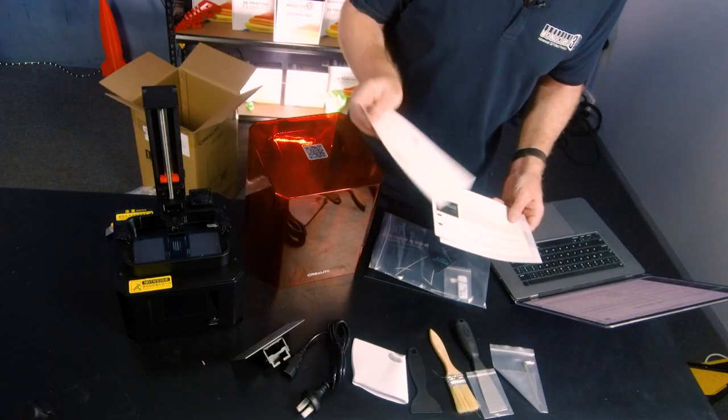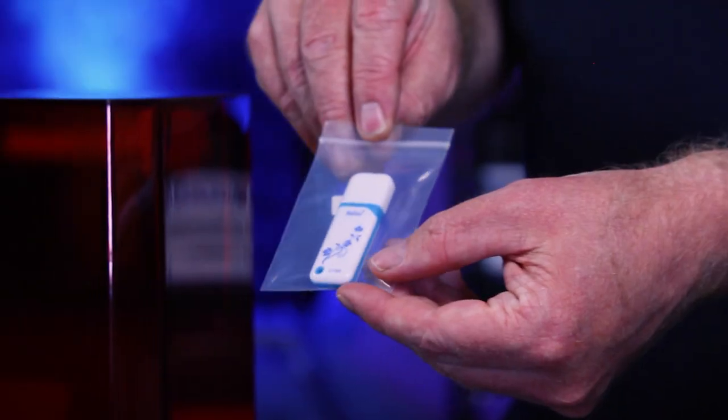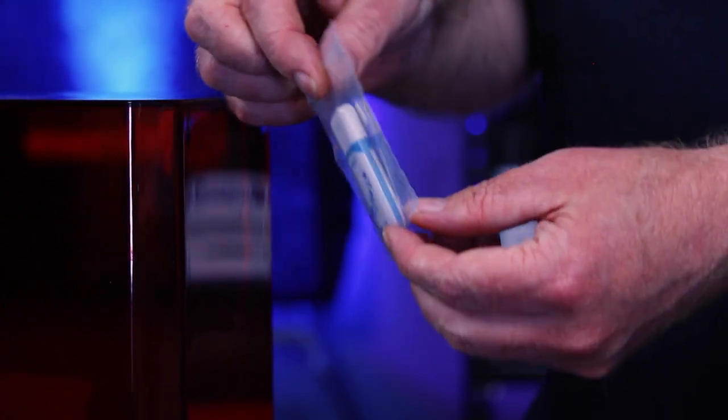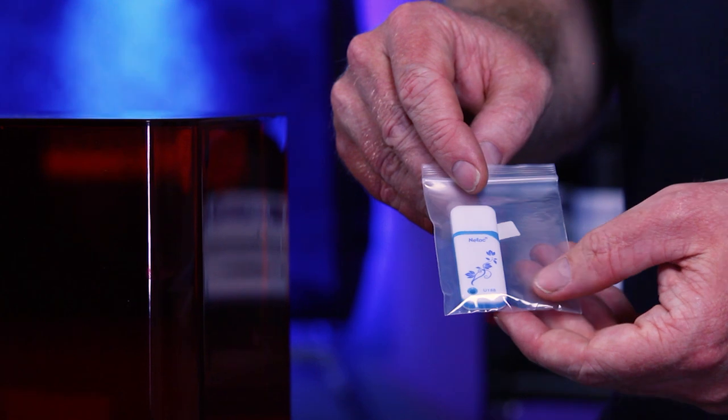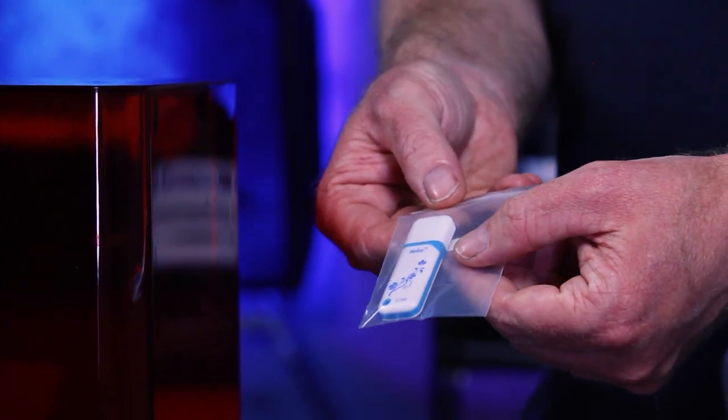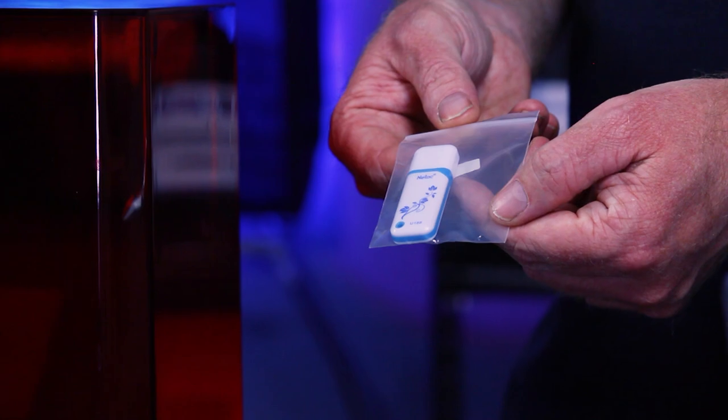It looks like we've got the standard allen keys there. The user manual, after-sales service card, quite a pretty USB with some flowers on it. This is obviously going to have your information about the printer and also potentially some test files.